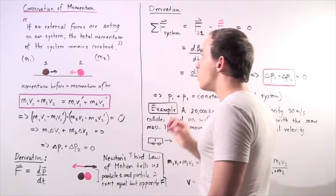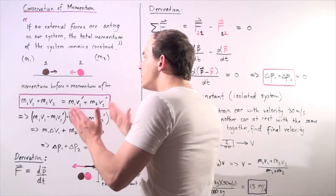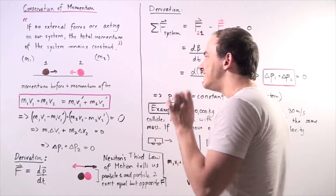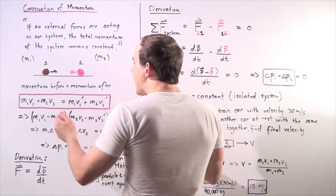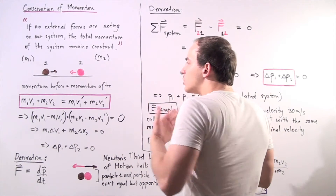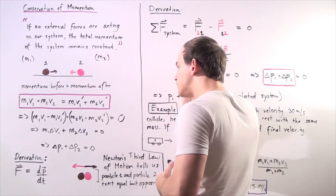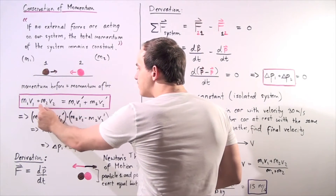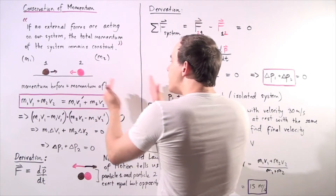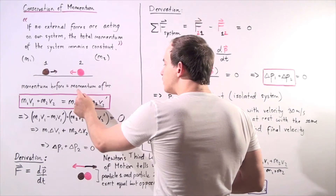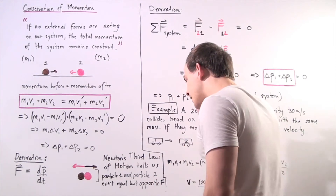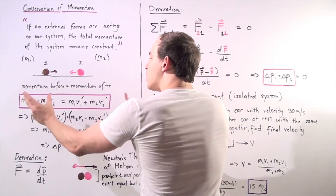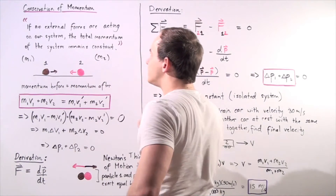The law of conservation of momentum states the following: if we sum up the momentum of our objects before the collision, that sum will be exactly identical to the sum of the momentum after the collision. Recall that momentum is simply mass times velocity. So the sum before is m1·v1 + m2·v2, which equals the sum after: m1·v1 prime + m2·v2 prime. This sum is equal to a constant, and those two constants are exactly identical.